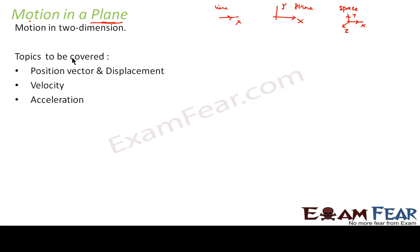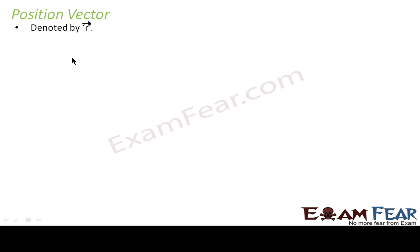We have already covered these same topics in motion in one dimension, so the basic concept will still remain the same. What I will emphasize here is how to understand position vector, displacement, velocity, and acceleration in two dimensions. Position vector is generally denoted by a small r with an arrow — it is a vector.